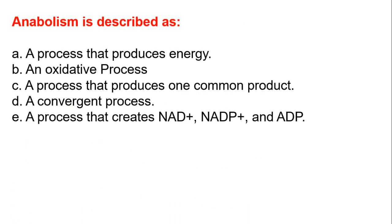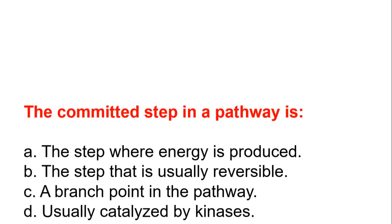Anabolism is described as: A, a process that produces energy. B, an oxidative process. C, a process that produces one common product. D, a convergence process. E, a process that creates NAD+, NADP+, and ADP. The answer is A, which is a process that produces energy.